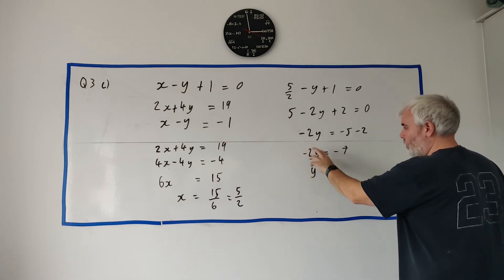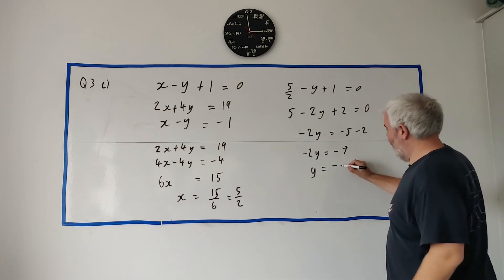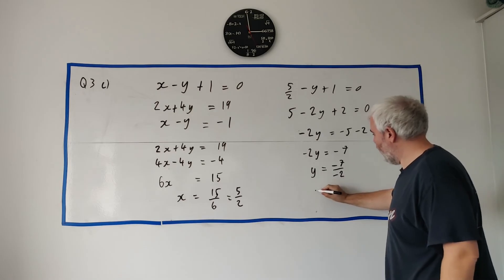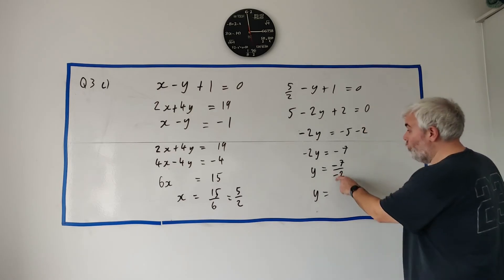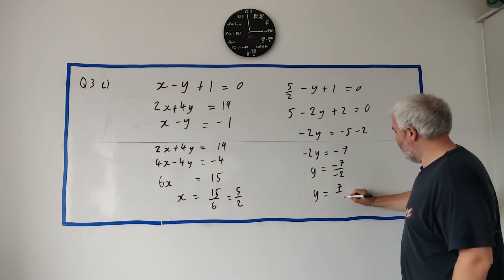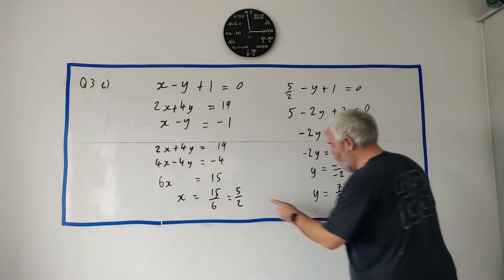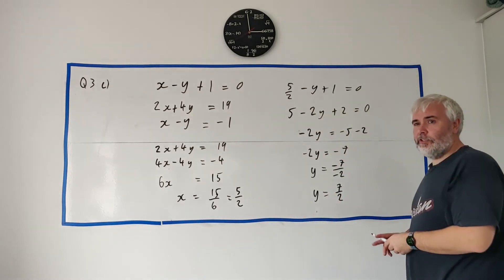That cancels. Minus 2 is disappeared there because they're divided by minus 2. Minus 7 divided by minus 2. So that's y equals, the two minuses cancel, they become a plus. 7 over 2. That's your final answer. x equals 5 over 2. y equals 7 over 2.